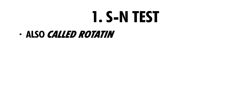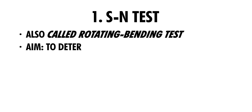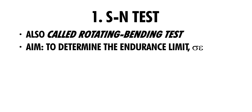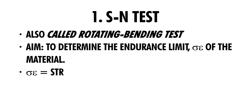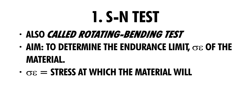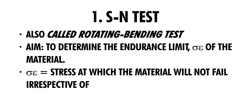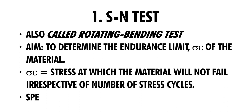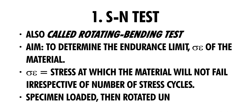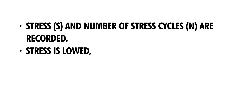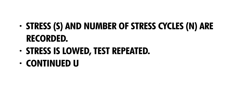We start with the SN test, also called the rotating bending test. In this test, we take a specimen, load it until it fails, and determine the stress S against the number of cycles N required to cause the specimen to fail. From this, the SN curve of the material — S for stress, N for number of cycles — is plotted.